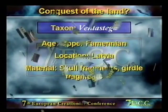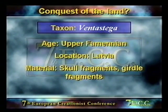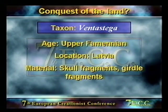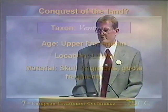Ventastega was the first tetrapod find from the Upper Famennian in Latvia. It consists of disarticulated cranial and post-cranial material. At first it was actually assigned to a fish, and with the discovery of further material it was reinterpreted by Per Ahlberg of the Natural History Museum as a tetrapod similar to Ichthyostega and Acanthostega.